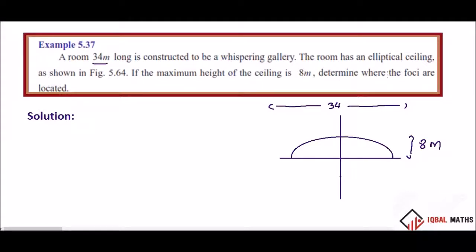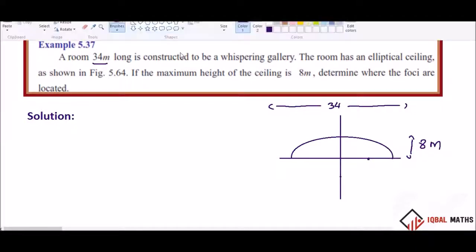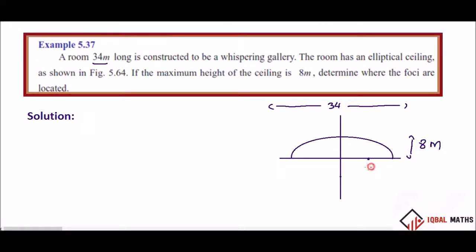Determine where the foci are located. We set up the X axis and Y axis. The right side of the ceiling is at point A, which is (17, 0), and the left side is at (-17, 0). The foci are at (c, 0) and (-c, 0).